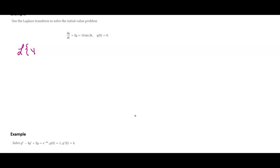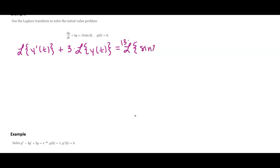Let's do a first order example to begin with. The Laplace of y prime of t plus three times the Laplace of y of t equals 13 times the Laplace of sine of 2t. Using our formula, the Laplace of the first derivative is going to be s times capital Y of s minus little y of zero.